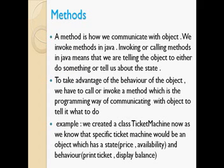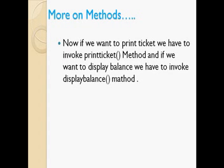What is a method? A method is how we communicate with an object. We invoke methods in Java to communicate with objects - either to tell the object to do something, or to tell us about the state of that particular object. For example, a ticket machine is an object with state and behavior. Its state includes price and availability, and its behavior includes display balance and print ticket. If we want to print tickets, we invoke the print ticket method. If we want to display the balance, we call the display balance method.